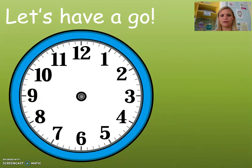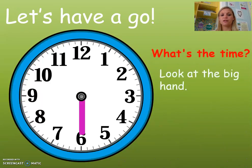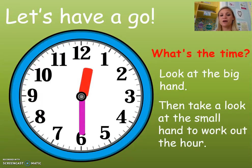Let's take another look. We look at the big hand — it's on the 6, so we know it's half past. We now need to look at the hour hand. And it's past the 12, so the time is half past 12.